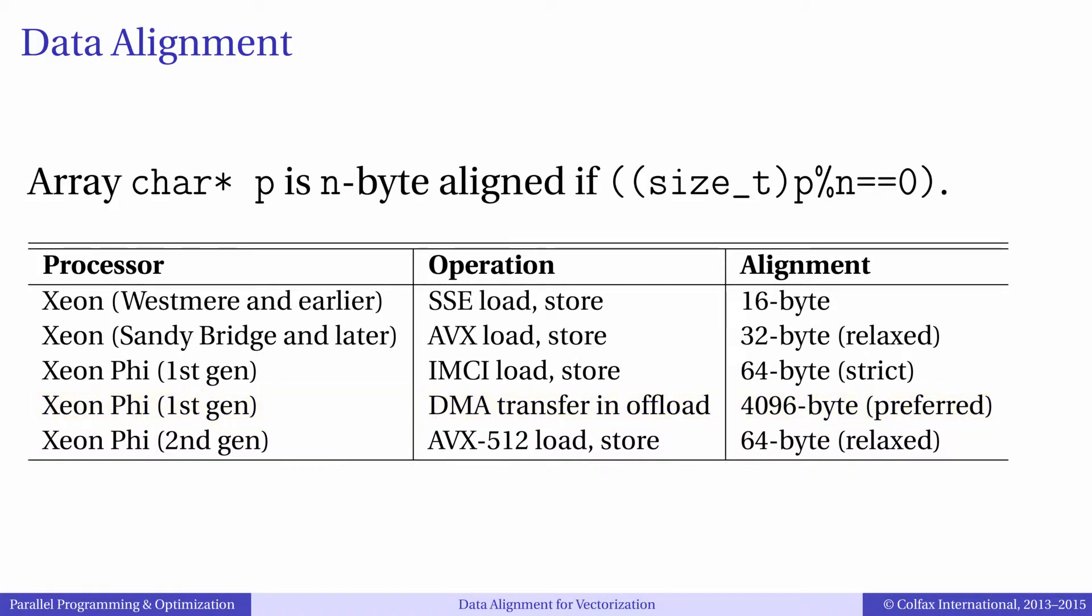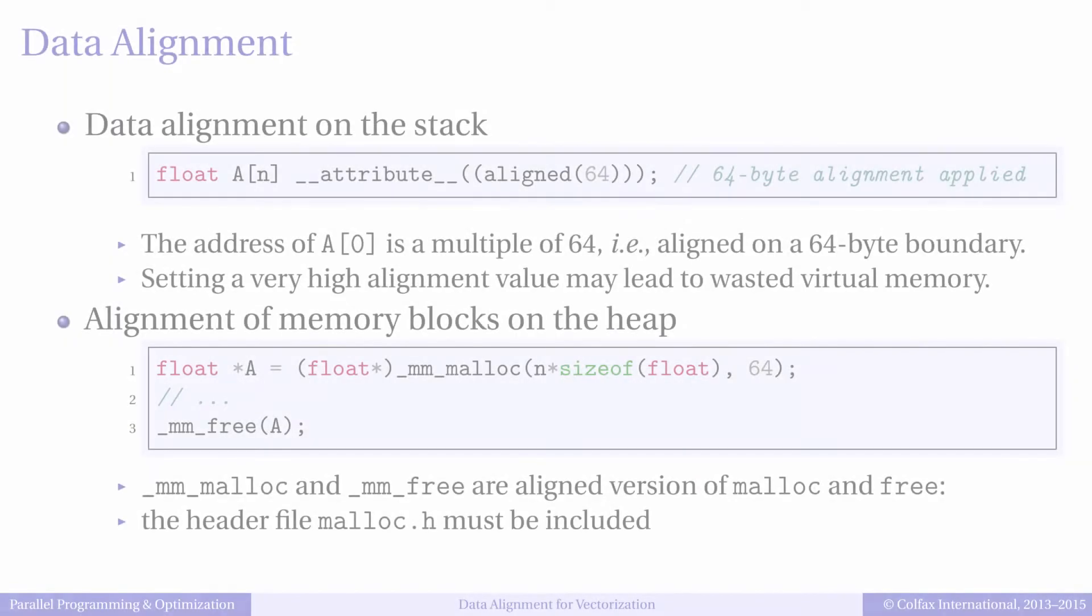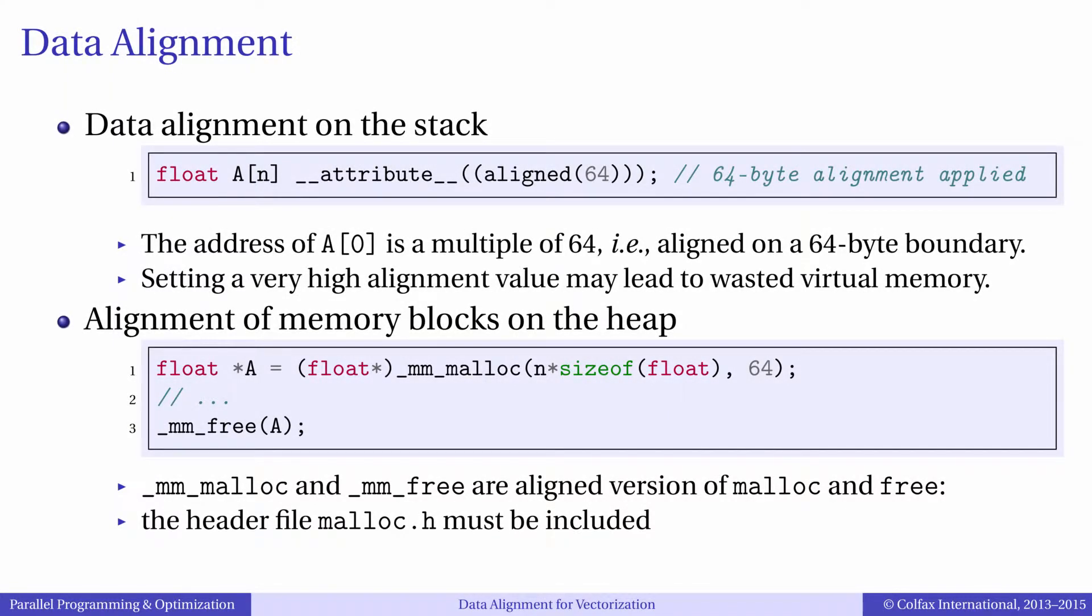How do you create arrays that begin on aligned boundaries? If you need an aligned stack array, you can use the qualifier attribute aligned. For example, this line creates an array A of size N elements and guarantees that this array begins on a 64-byte aligned boundary.